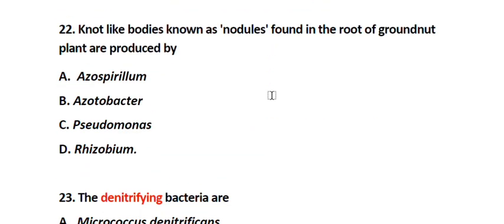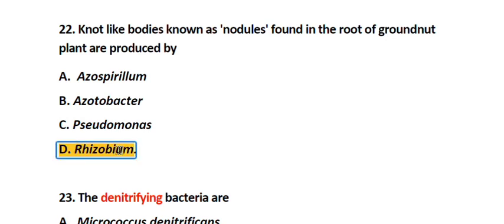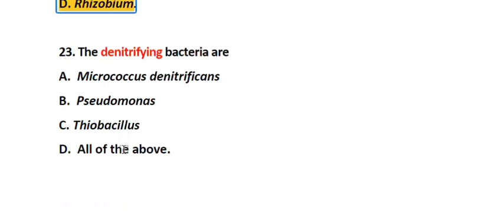Question number 22. Nodule-like bodies found in the root of groundnut plants are produced by: Option A. Azospirillum, Option B. Azotobacter, Option C. Pseudomonas, Option D. Rhizobium. The correct answer is Option D. Rhizobium.